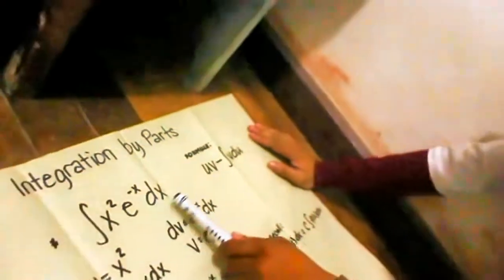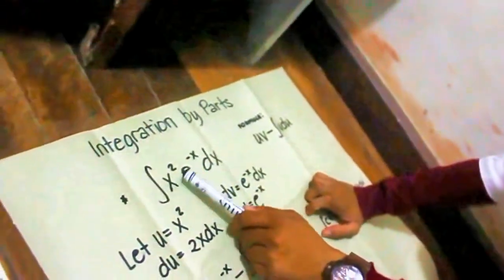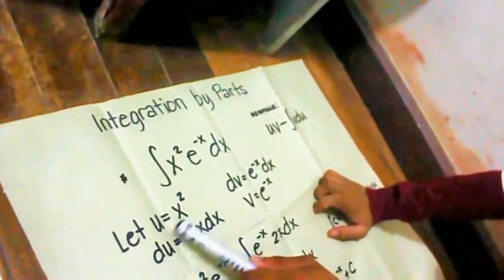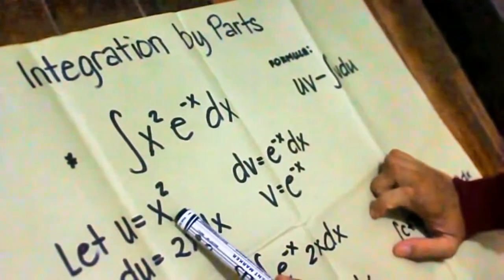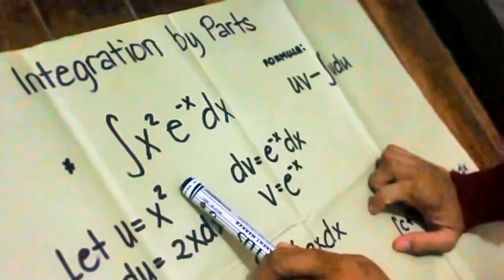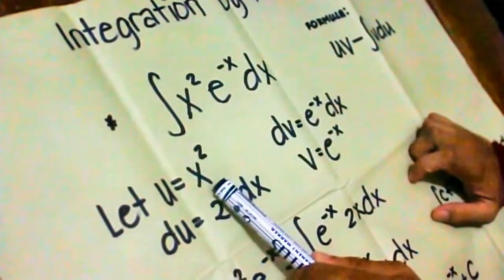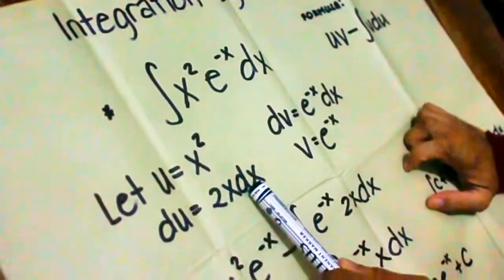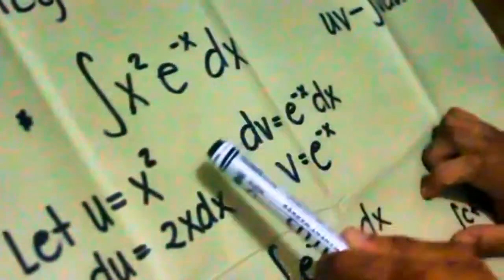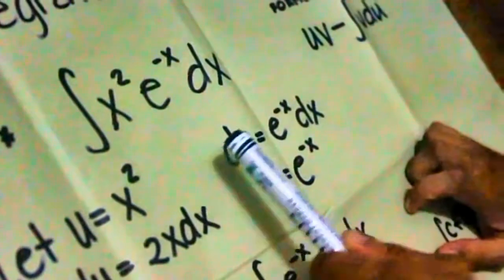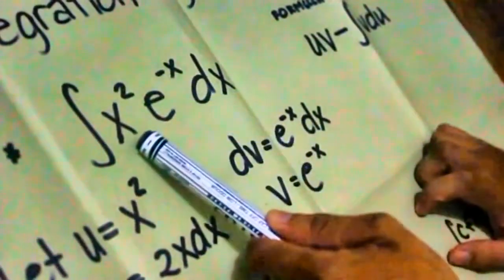We need to find u from this expression. We let u equal x squared. Since x squared is our u, we need to find the derivative of x squared, which is 2x dx — so that will be our du.